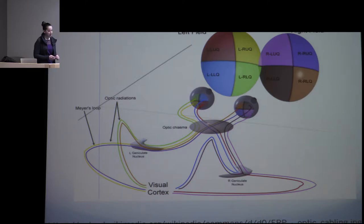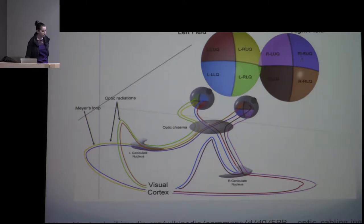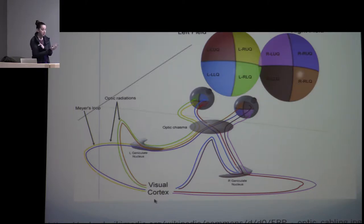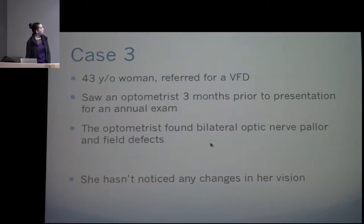To reiterate the anatomy: her right homonymous field defect corresponds to the left visual cortex and pathway. The nasal and temporal retinal fibers from each eye come together in the optic tracts, pass through the lateral geniculate, and project to the occipital cortex. The diagram needs to be thought of in reverse when correlating with imaging — this was on the left side.